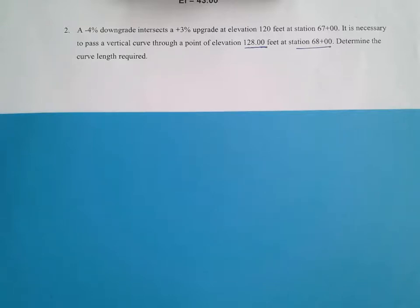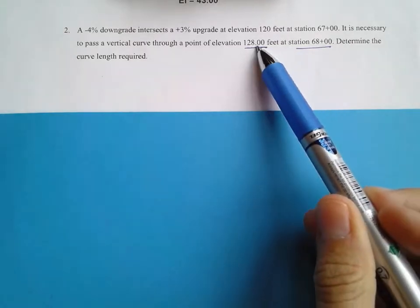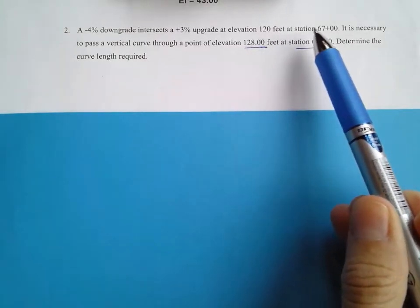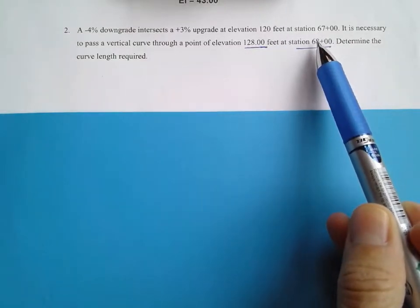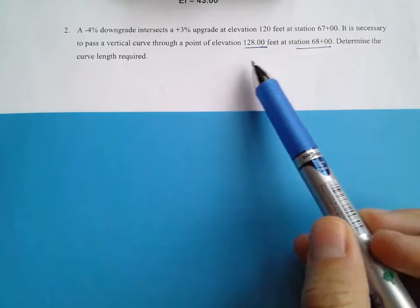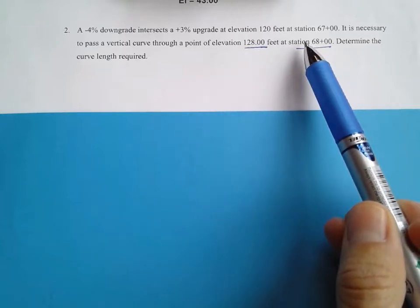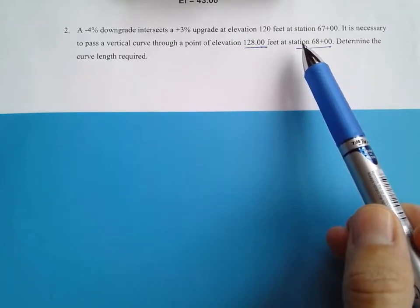We're going to look at a problem where we find the length of a vertical curve that passes through a fixed point. We're given the elevation of the fixed point and the station of the fixed point, and we'll use that information to find the length of that curve.